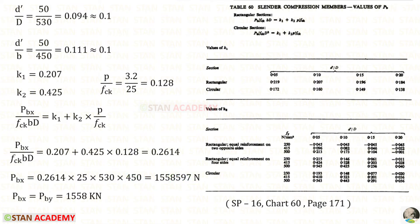We can convert this into KN. So, we need to divide that by 1000. And we can approximately write as 1558. For D dash upon D and D dash upon B, we have got a same value. In this case, PBX and PBY will be same.